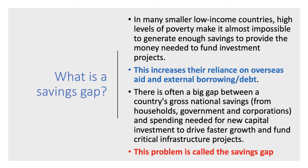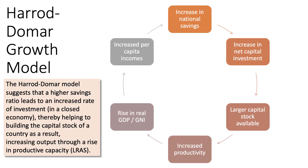— savings from businesses, households and the government — and the spending needed for investment, including infrastructure needed to drive faster growth. This links to the Harrod-Domar growth model, which is a simple model explaining the significance of savings in terms of financing investment and the importance of investment in driving up per capita incomes. If you can lift the level of savings, that should provide the investment funding and finance necessary to increase net capital investment.